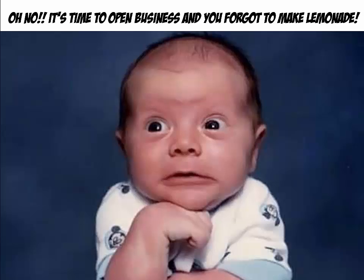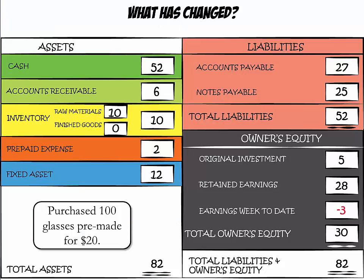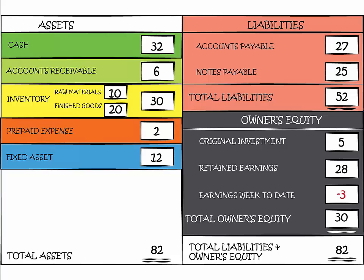You forgot to make lemonade, so you purchase pre-made lemonade for $20 in cash, containing 100 glasses. Since we used cash, our cash will go down by $20, and our finished goods inventory goes up by $20. Cash went down from $52 to $32, and finished goods inventory went up from $0 to $20.